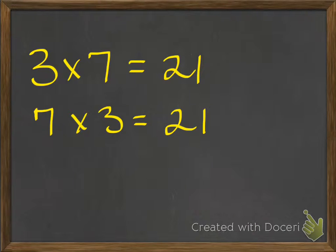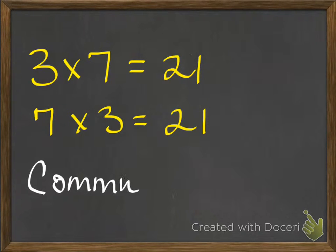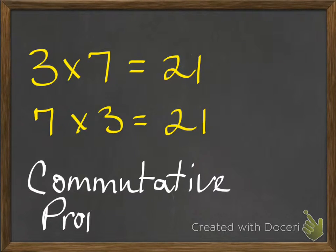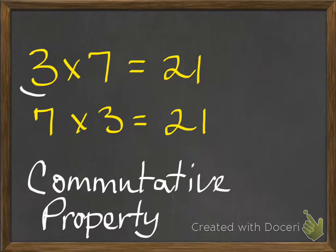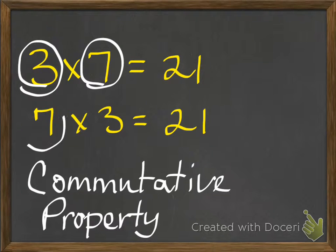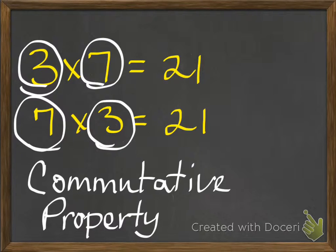We have 3 times 7 equals 21, and 7 times 3 equals 21. Which property was that again? If you said commutative property, you are correct. Which are the factors? The factors are the 3 and the 7. Which is the product? The product is 21.